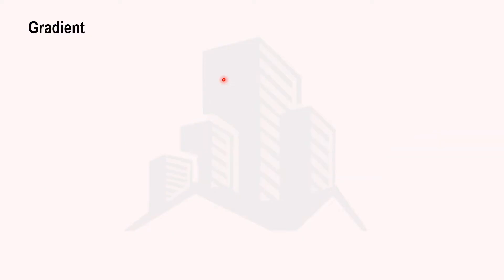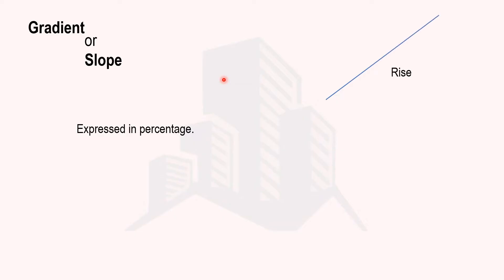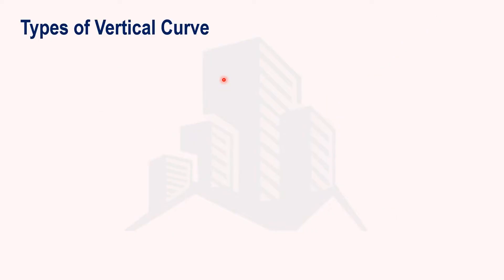In order to understand the different types of curves, you should know about gradients or slopes, which are usually expressed as a percentage, sometimes as an angle, and sometimes as a ratio. Slopes can be of two natures: a rising slope, which is usually positive, and a falling slope, which is usually represented as negative.